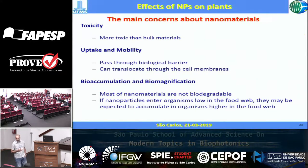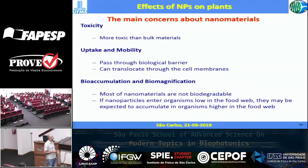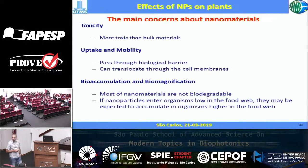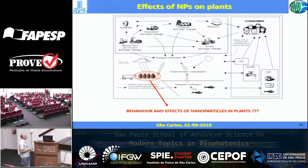Why can nanoparticles offer risk to the ecosystem? As I mentioned, they could be toxic simply because of their size. Also, the uptake and mobility of nanoparticles is greater than for larger particles — biological barriers are not prepared to block nanoparticles, which can pass through cell membranes. Another important issue is bioaccumulation and biomagnification: most nanomaterials are not biodegradable, and if nanoparticles enter an organism low in the food chain, higher organisms can accumulate them.